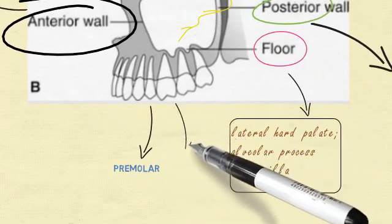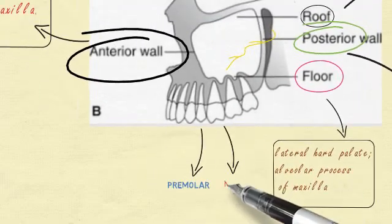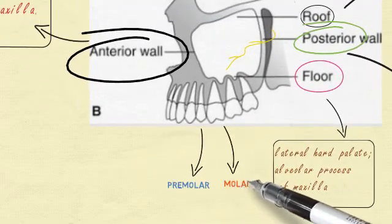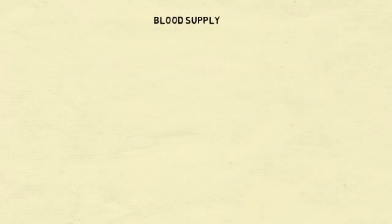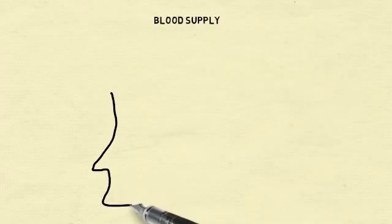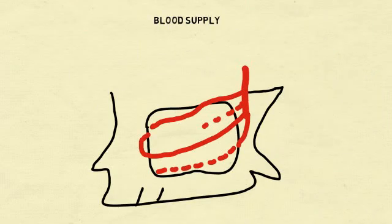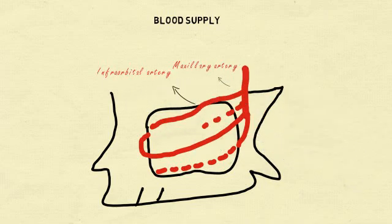The floor is formed by the hard palate and the alveolar process of the maxilla, carrying the roots of the premolars and the molars. The blood supply to the mucous membrane is from arteries which pierce the bone and are derived from the facial, the maxillary, the infraorbital, and the greater palatine arteries.